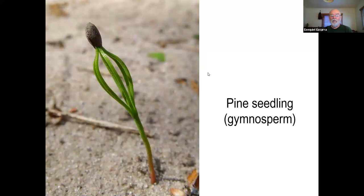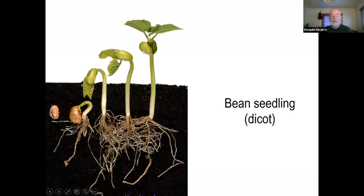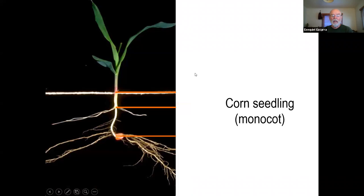Here you have an image of a pine seedling — a gymnosperm. You can count it has six cotyledons. Compared to a bean seedling — a dicot — which is very easy to do at home, putting some beans to germinate. It only has a first pair of two leaves. And then corn: when it germinates, you can see the grain here. It produces one cotyledon — the structure that eventually has the embryo on top. From the embryo, you get the plant growing. It has only one cotyledon.